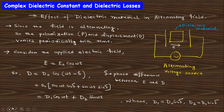Complex dielectric constant: in the previous discussion, we discussed that for a dielectric material, when we apply a DC electric field, polarization occurs and has three parts — electronic, atomic, and dipolar or orientation. Now, if we apply an AC or alternating voltage across a capacitor with a dielectric material between the plates, the alternating electric field changes with time, and the polarization also changes with this electric field.